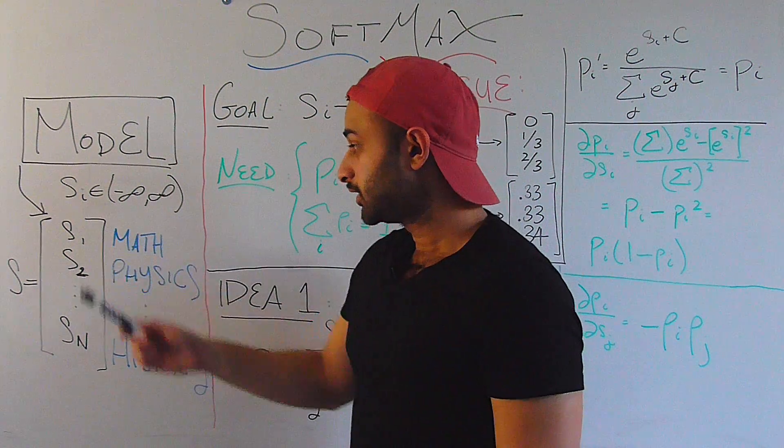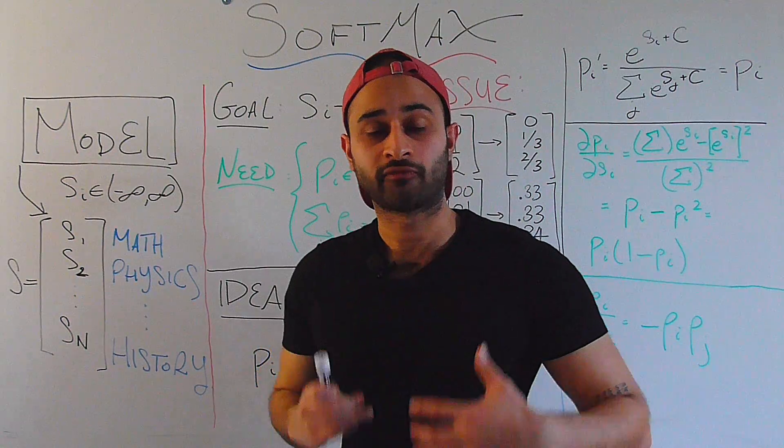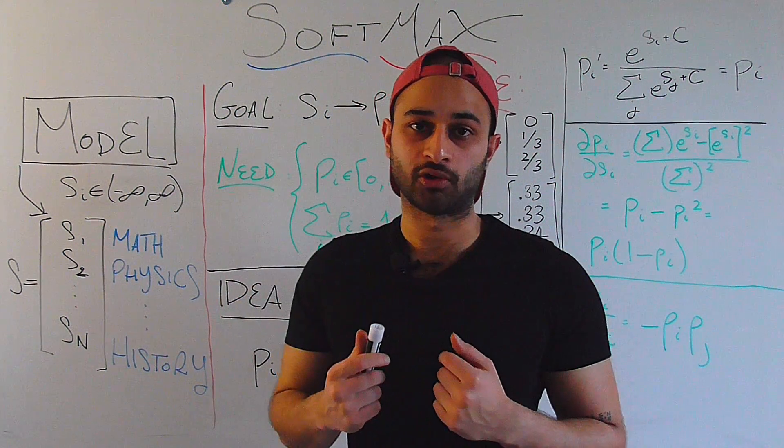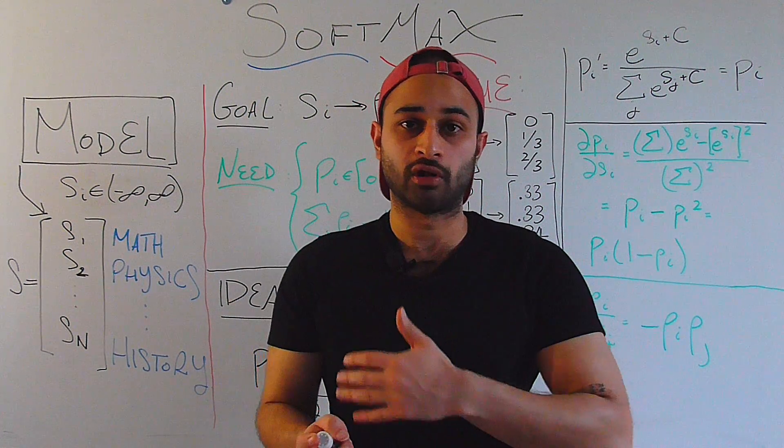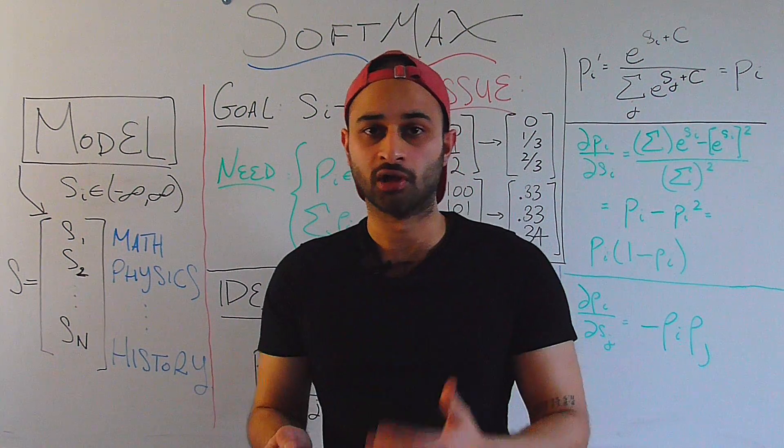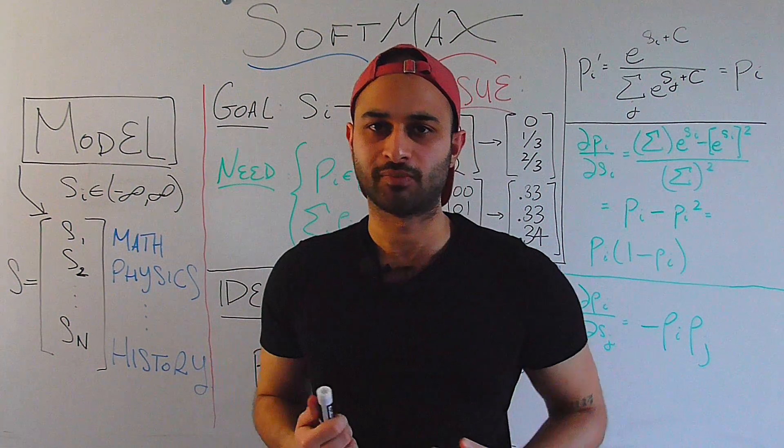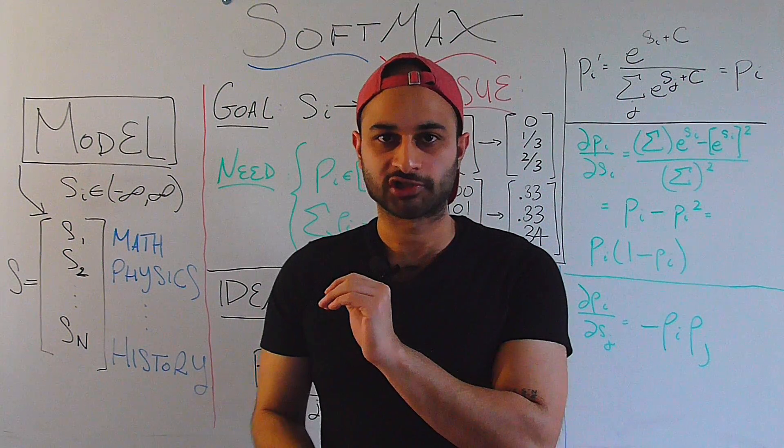If s1 is much, much higher than all of the other si values, we have a lot of overwhelming evidence that the student will choose math as their first major when they go to college. However, if s1 is very, very low compared to all of the other si values, we have a very low chance, a very low confidence that they're going to choose math as their first major upon entering college. So that's how we kind of understand these scores.